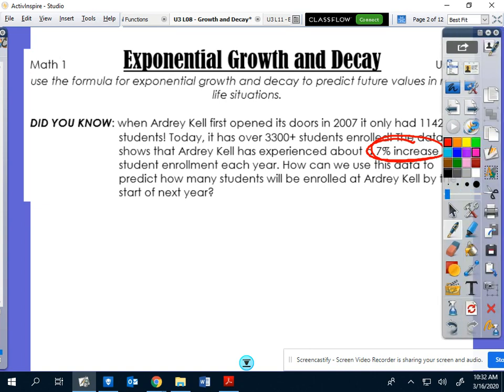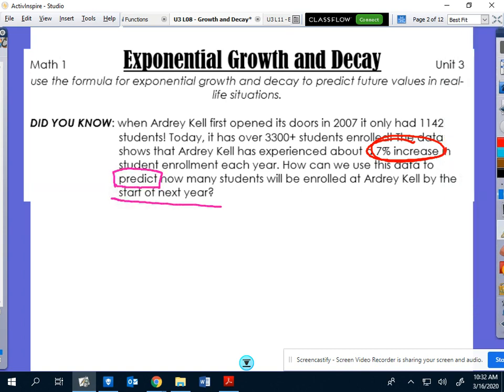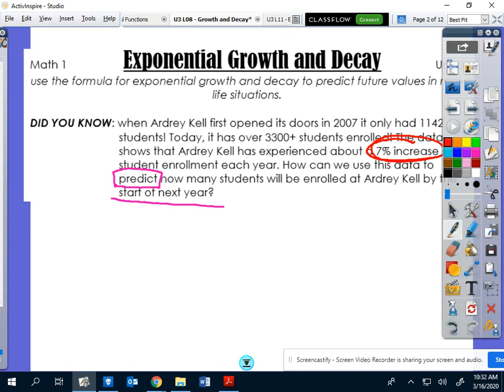So our enrollment goes up 7%. The question then comes, how can we use that information? How can we use that information to predict, that's going to be the key, to predict how many students we're going to have at the start of next year? So the start of the 2020 school year. Right now we're in 2019, 2020. So what we're going to do is we're going to teach you today how to answer this type of question. Because everything we have in this word problem actually connects to either the a, the b, or the k.